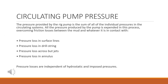Circulating pump pressure. The pressure provided by the rig pump is the sum of all of the individual pressures in the circulating system. All the pressure produced by the pump is expended overcoming friction losses between the mud and whatever it is in contact with: pressure loss in surface lines, pressure loss in drill string, pressure loss across bit jets, and pressure loss in the annulus. Pressure losses are independent of hydrostatic and imposed pressures.